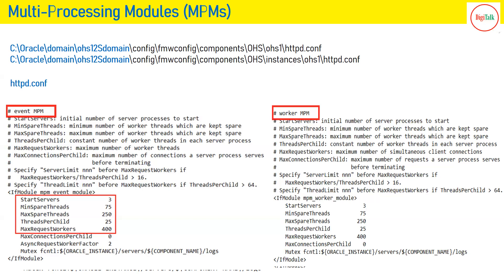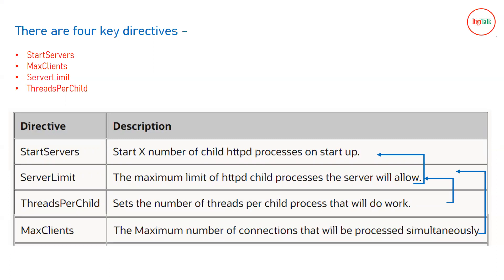The important parameters to find inside the MPM section are: StartServers, MinSpareThreads, MaxSpareThreads, ThreadsPerChild, MaxRequestsPerChild, and MaxClients. Since the default MPM in Oracle OHS is Event, if you want to modify any parameters for Oracle OHS, open your httpd.conf file and update the parameters specifically defined inside the Event MPM section. Updating parameters in a different MPM section will have no effect.